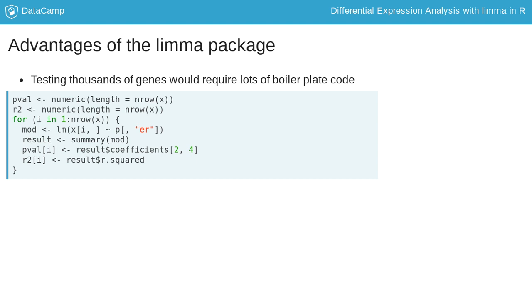But it's not only more convenient for you, it's also better statistics. The loop in the code above treats every gene as a completely independent analysis. But because all the genes were measured in the same experiment, limma uses a statistical technique known as empirical Bayes to share information across the genes, which is especially helpful for studies with small sample sizes.